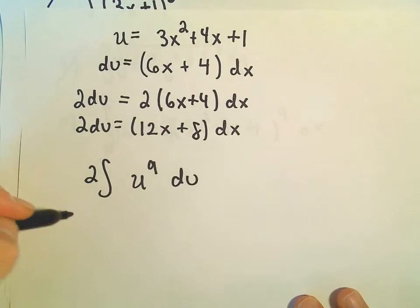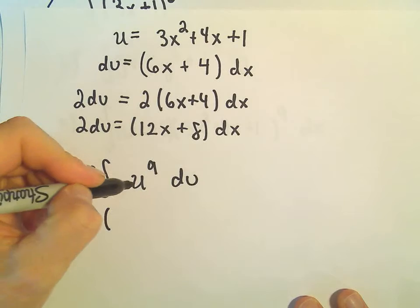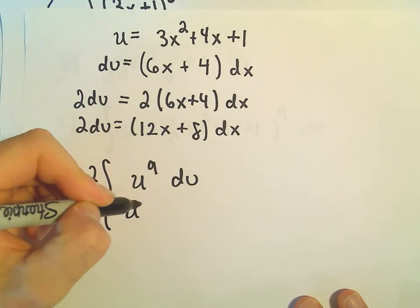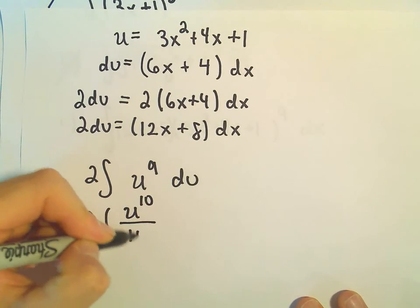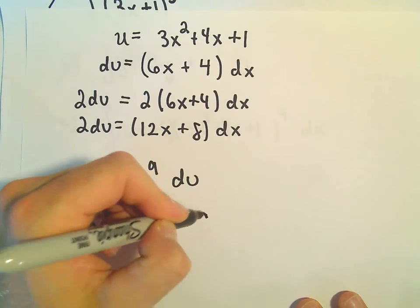And now we're in business. We can just integrate. The anti-derivative of u to the 9 will be u to the 10th over 10 plus c.